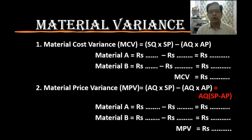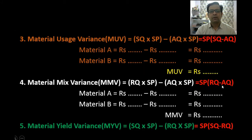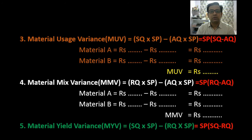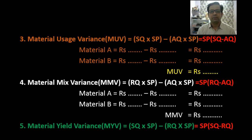The third variance is Material Usage Variance (MUV) — how much material have we used? To find this, we compare standard quantity with actual quantity, both multiplied by standard price to express the answer in rupees. The formula is: SQ × SP minus AQ × SP. Since SP is common in both terms, the short formula is: SP × (SQ − AQ).